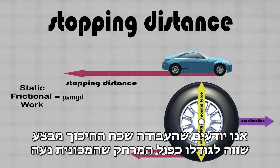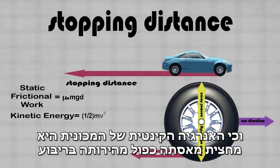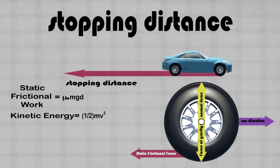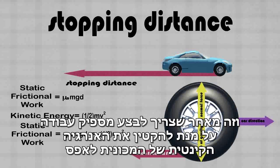We know that the static frictional work is equal to the static frictional force times the distance the car travels, and that the kinetic energy of the car is one-half mv squared. We can say that the kinetic energy of the car is equal to the static frictional work, because enough work must be done to reduce the car's kinetic energy to zero.